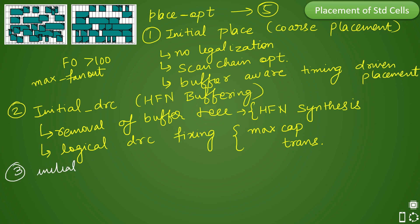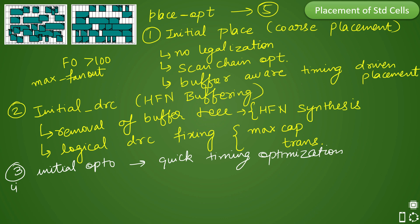The third step in the place-opt stage is called initial opto. In the initial opto stage, the tool very quickly does timing optimization. Since some DRV fixing was done earlier, new timing violations may have been introduced, and the tool tries to quickly fix those violations.